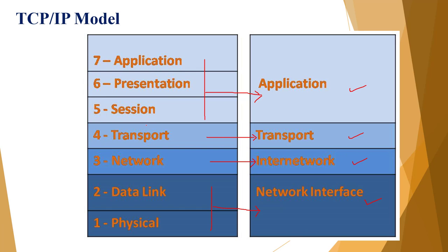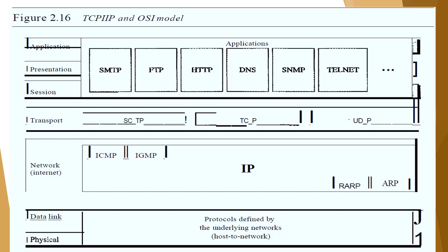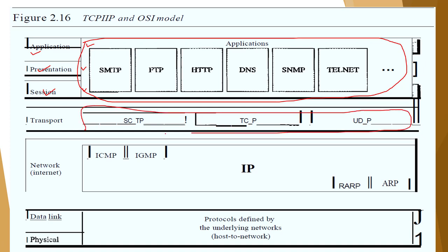In the TCP/IP model, the three upper OSI layers — application, presentation, and session — are merged into a single application layer. The transport layer remains as is. The network layer is called the inter-network layer. The data link and physical layers are merged into a single network interface layer. So the four TCP/IP layers are: application, transport, inter-network, and network interface.